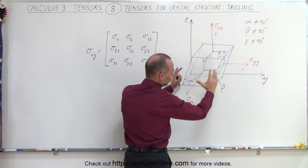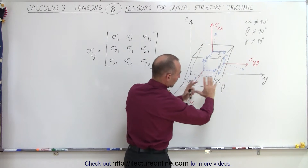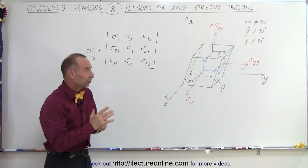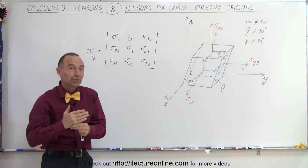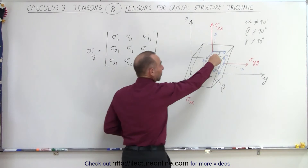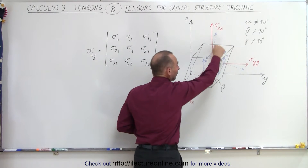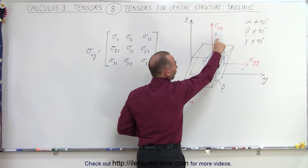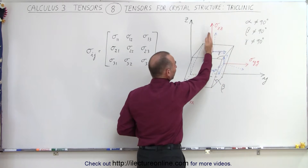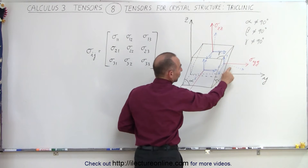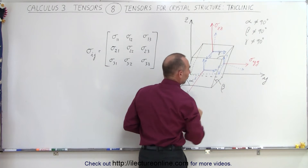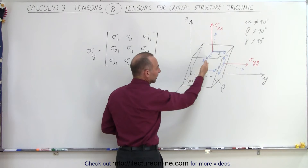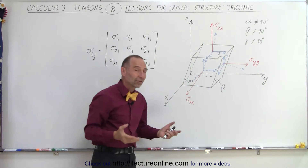This whole structure is leaning in all three directions, which means that if you draw vectors that are perpendicular to the surface, represented by these broken line arrows, you can see this would be perpendicular to the surface but not parallel to the z-axis, not parallel to the y-axis, and not parallel to the x-axis.